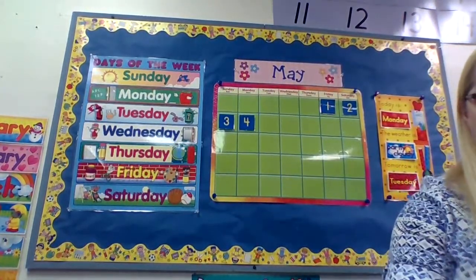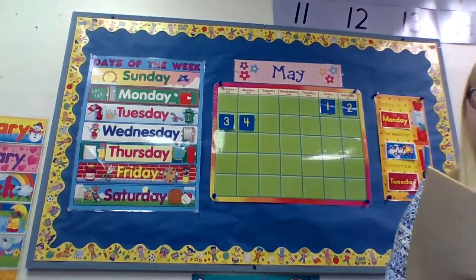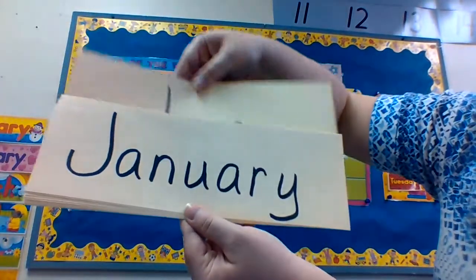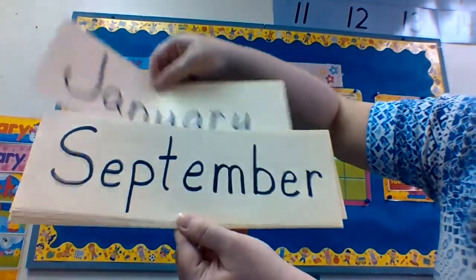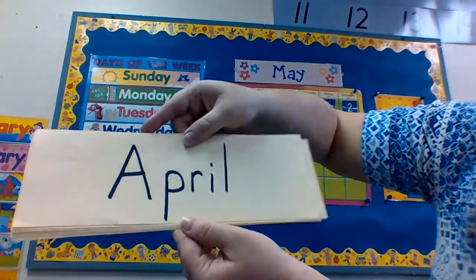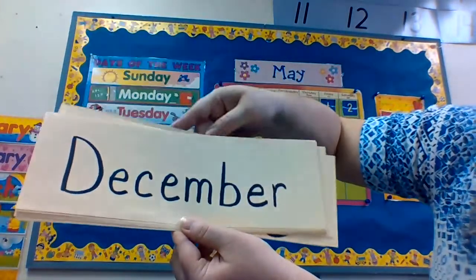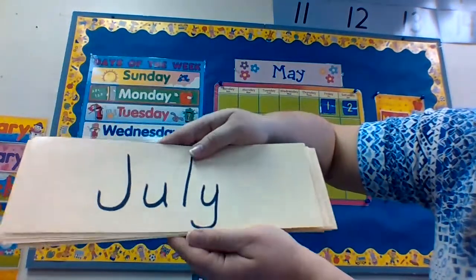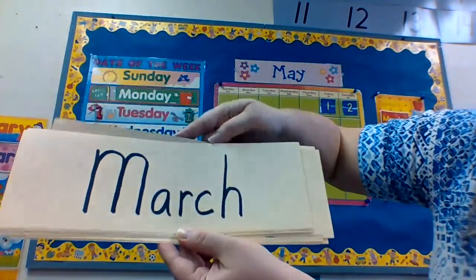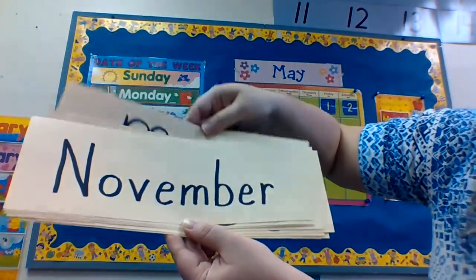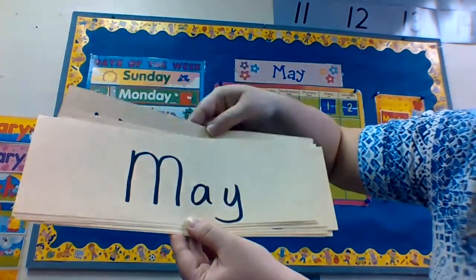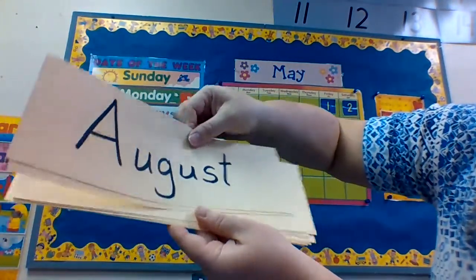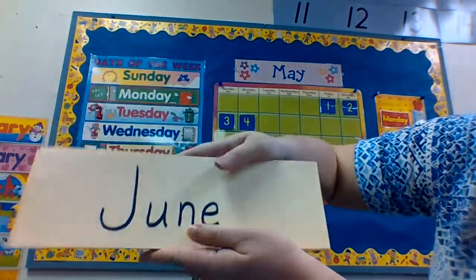And last, our months of the year. Let's start with June: January, September, April, December, February, July, March, November, May, August, October. Back to June.